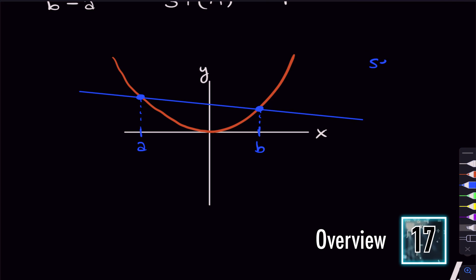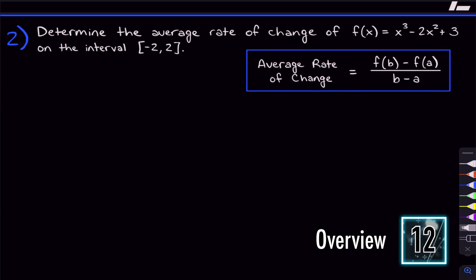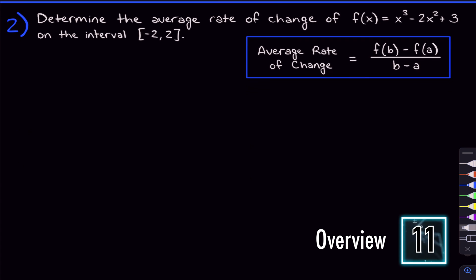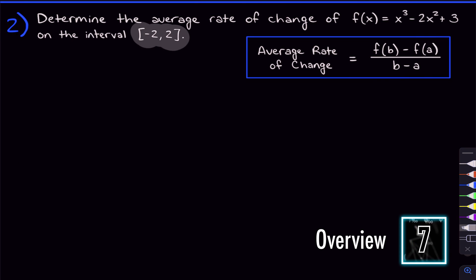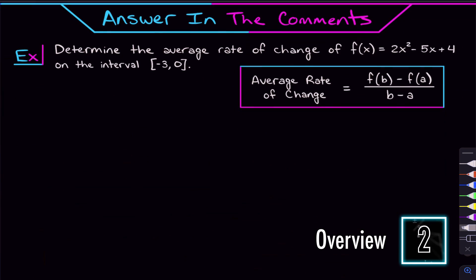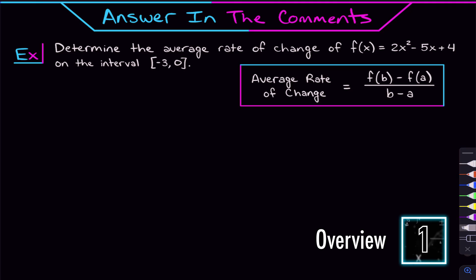After we do that problem, we're going to talk about what the average rate of change actually means graphically. Then we're going to move on to a harder average rate of change problem where the function gets a little more complex and the interval is also going to be in a different notation. After we do all that, I'll give you a problem to try and answer in the comments.